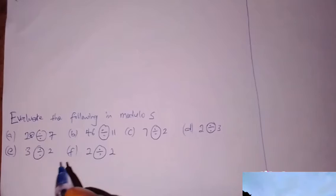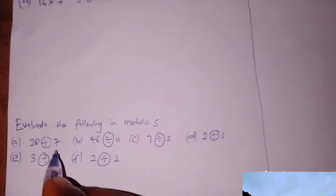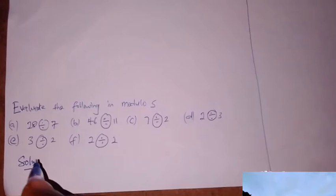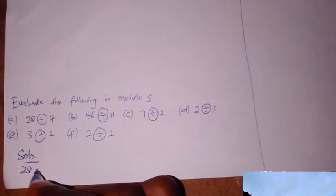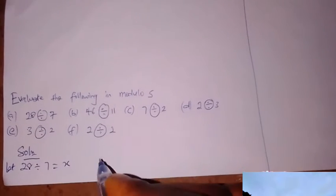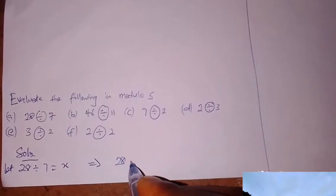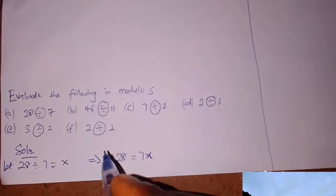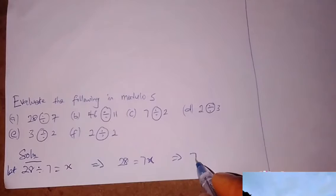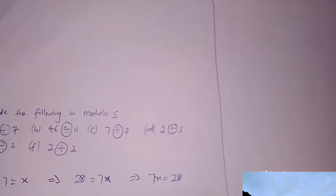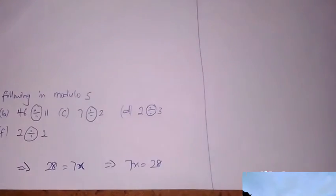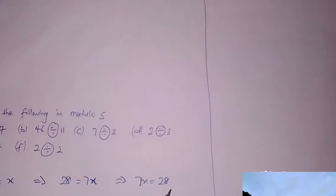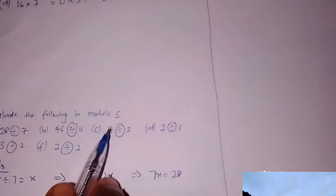For division, the first question is 28 divided by 7. To solve this, you introduce the variable x. So 28 divided by 7 equals x, which implies 28 equals 7x. So 7x equals 28. In division, we have three methods: first, find the modulo of both sides in the given modulo — here it's modulo 5. Second, add the modulo to the right-hand side. Third, divide both sides if it can be divided.